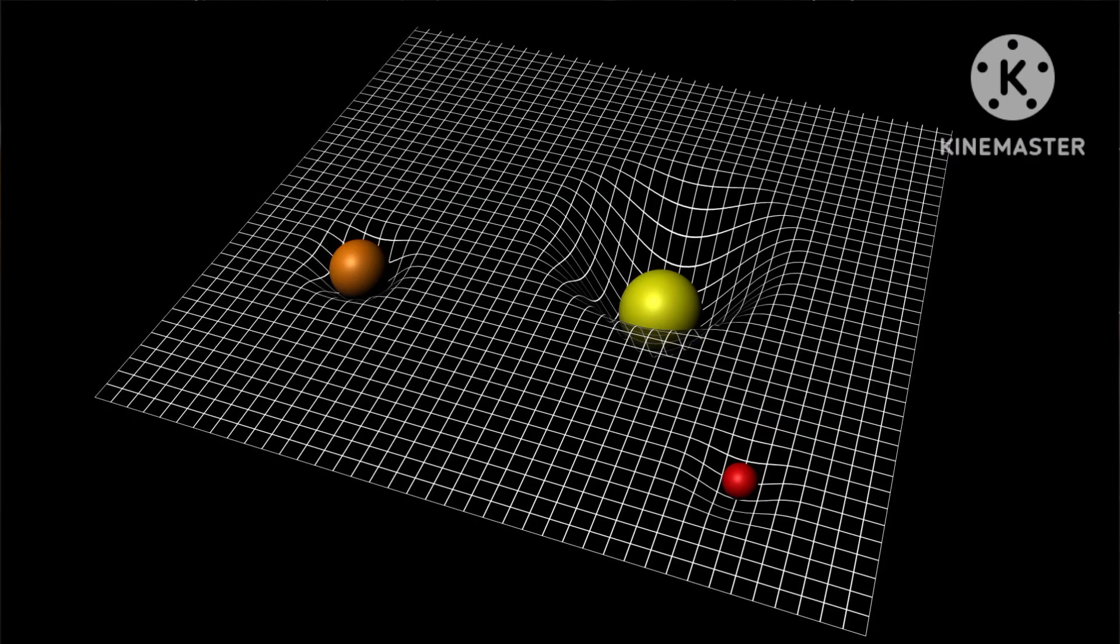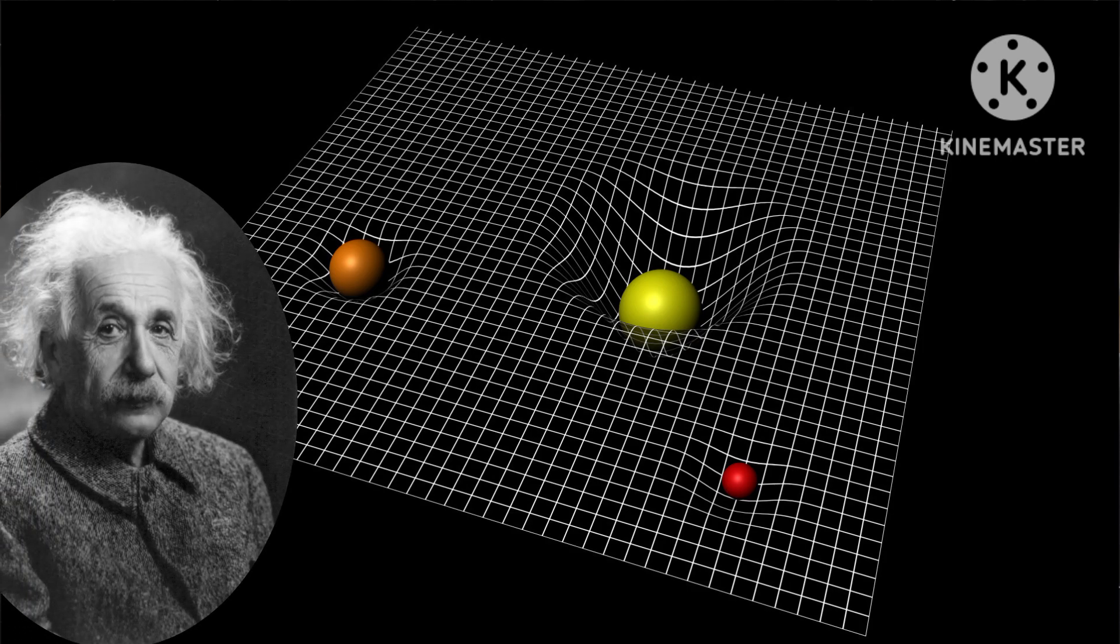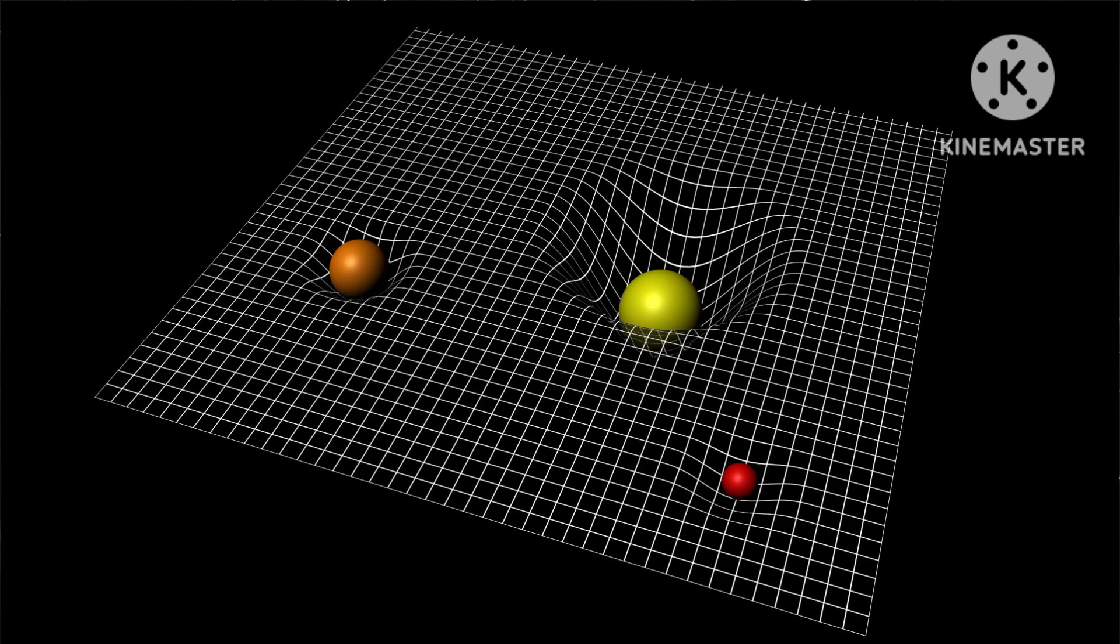Albert said that to visualize this we need to imagine a big mesh. When you place objects on this mesh, it bends down due to weight. The space-time mesh also bends in the same way. It curves with the weight of the big planets and stars. The more the gravitational force of the planetary object, the more the space-time mesh will curve around them.